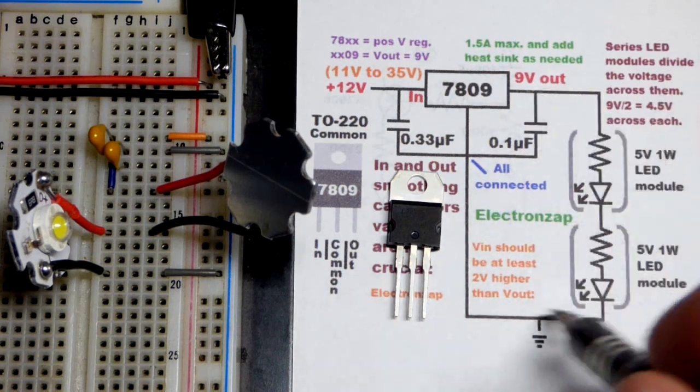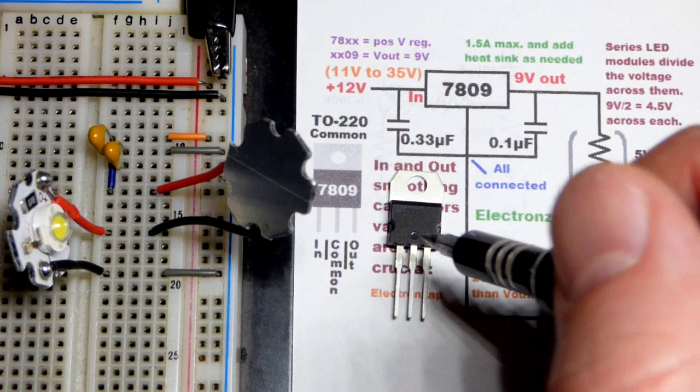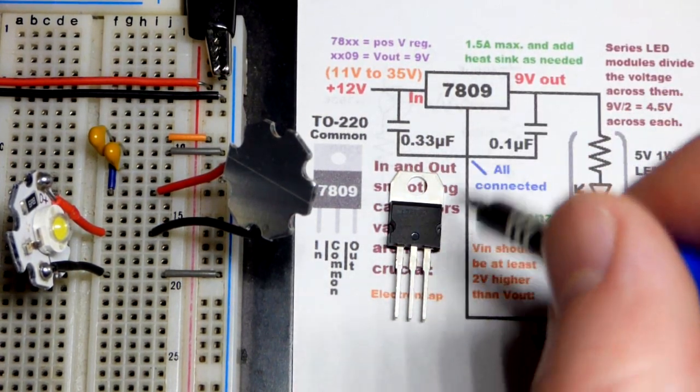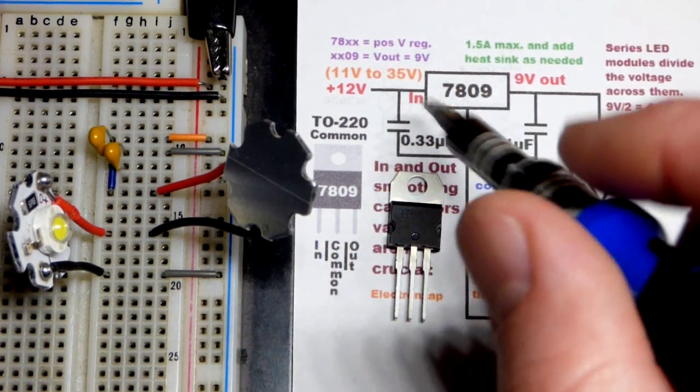To get 9 volts across the load when we're using a 12 volt power supply we're going to use a linear voltage regulator. That is the 7809, this is actually L7809, but the part number that is most important is 7809.